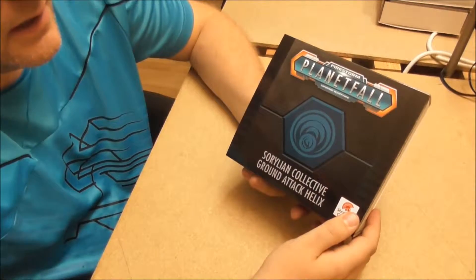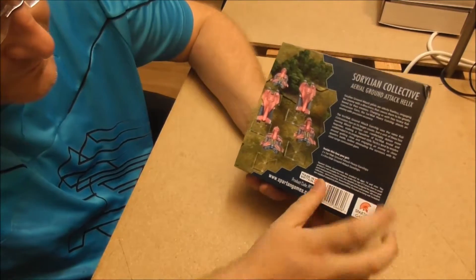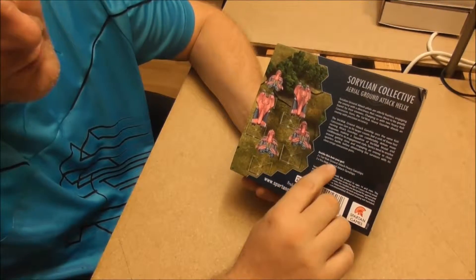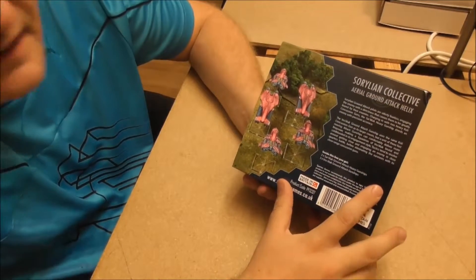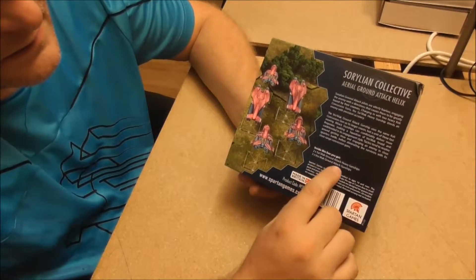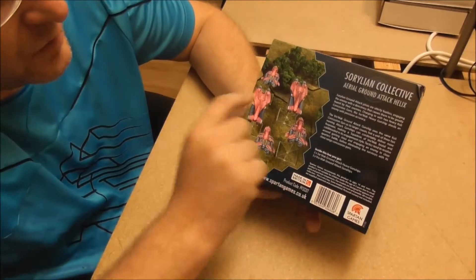And I will open it right now and show you what's inside. We should receive two Zarmak Ground Attack Heavy Gunships and then three Ro-Mak Ground Attack Gunships. These are the smaller ones.